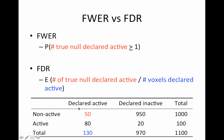False discovery rate focuses on the entire declared-active column. Of all the voxels declared active — say 130 — we're trying to control the ratio of true false positives to the total number declared active. More precisely, it controls the expected value of that ratio. That's what false discovery rate is controlling.